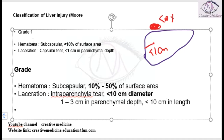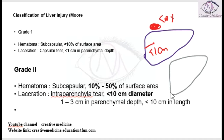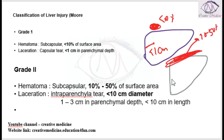Let me show you. If this is the liver, there is a subcapsular hematoma involving 10 to 50% of surface area, and there is an intraparenchymal tear involving 1 to 3 cm of parenchymal depth and less than 10 cm in length.